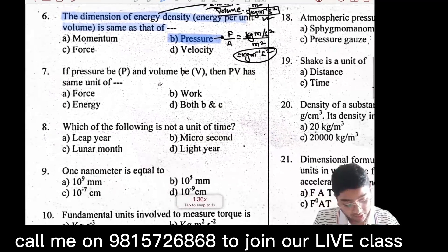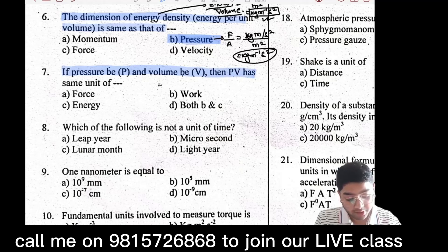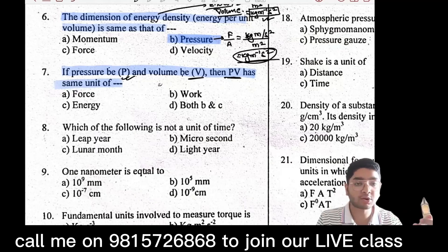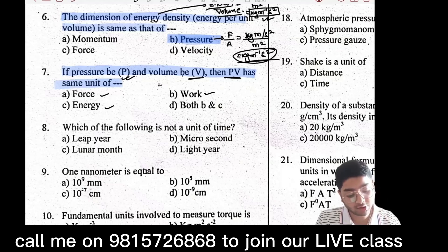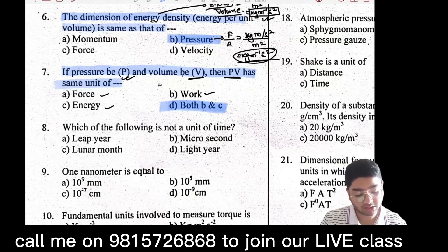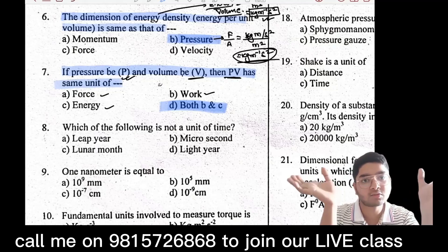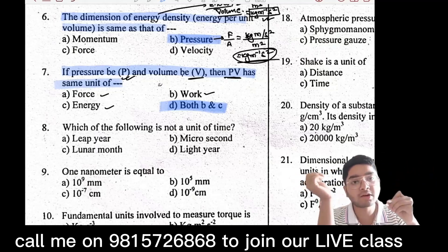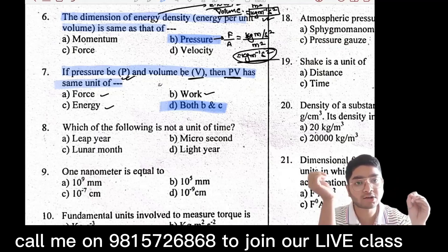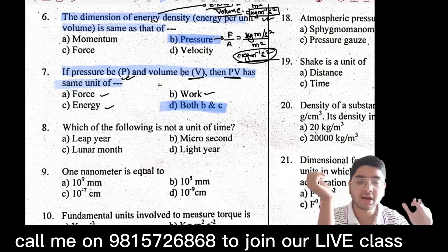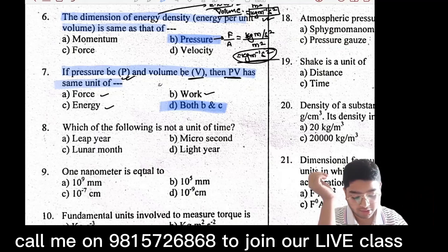Another question: if pressure P times volume V equals PV, then PV has the same unit as work and energy. Pressure times volume: pressure is force/area, volume is m³. Multiplying gives the work dimension M·L²·T⁻². The answer is work and energy.